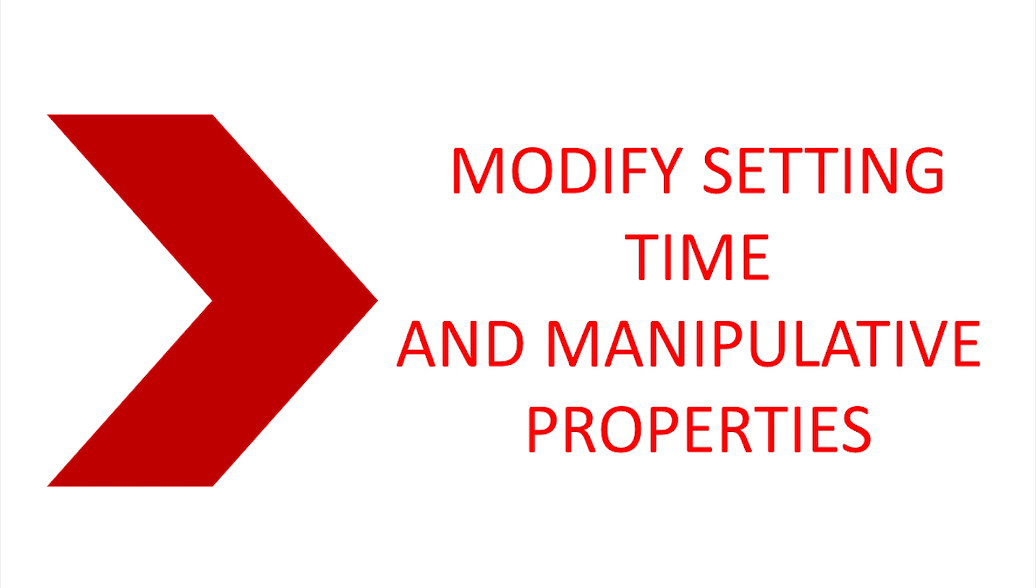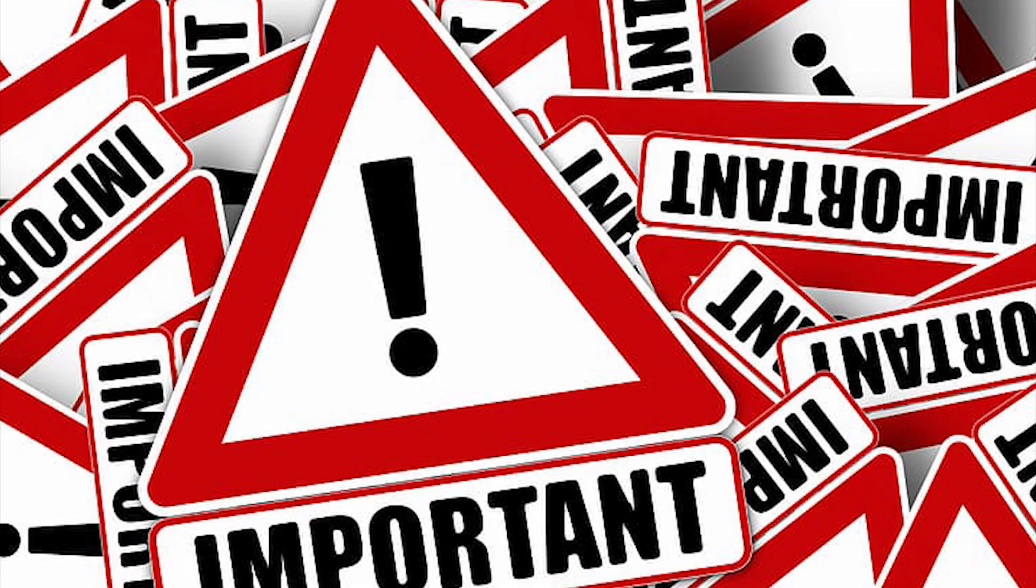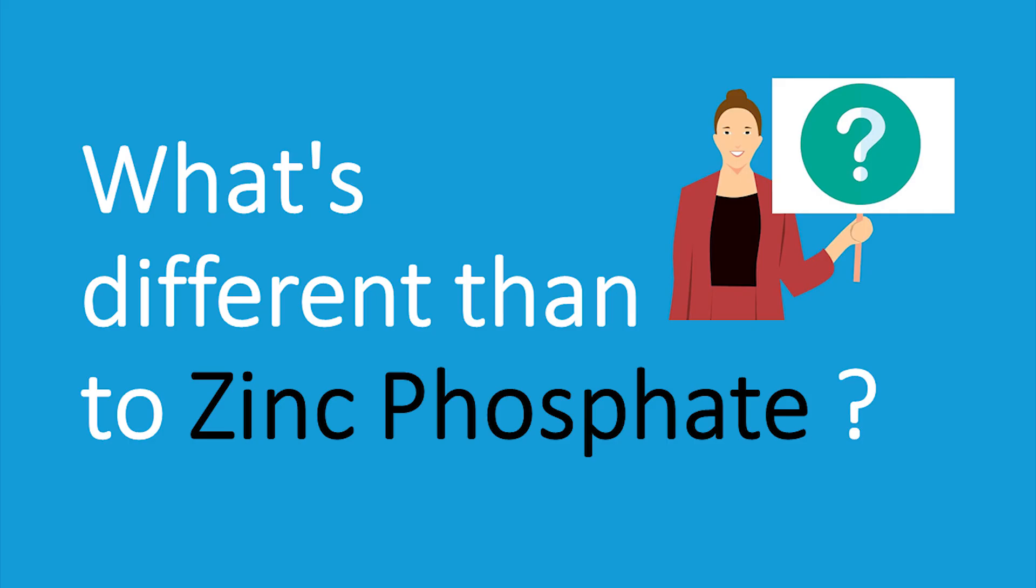Keep watching this video and you will know why this component is also important for another major function, and that function is very routinely asked in your exam. Now let's talk about the liquid component, and this is the major differentiating feature between zinc phosphate cement and zinc polycarboxylate cement.